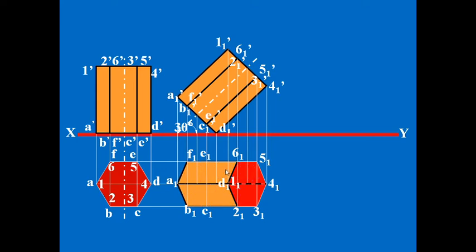And then what you see here is, you will see the top face clearly, 1, 2, 3, 4, 5, 6. And the base will not be seen, so you have to represent it by hidden lines.